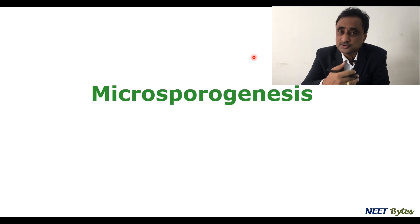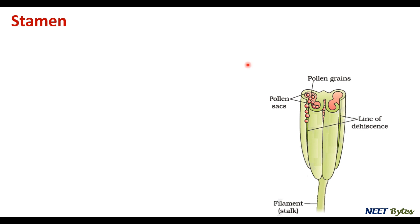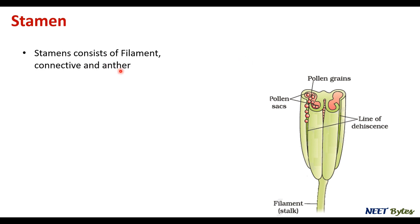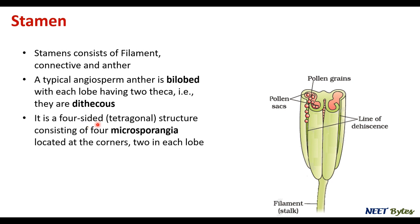Let's talk about the structure of the anther, which consists of filament, connective, and anther. In a typical anther, it is a bilobed structure. Since it is a bilobed structure, each lobe has two thecae, so we call them dithecous. It is a four-sided structure consisting of four microsporangia located at the corners, two in each lobe.